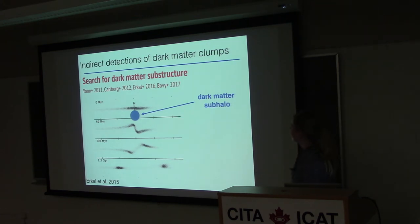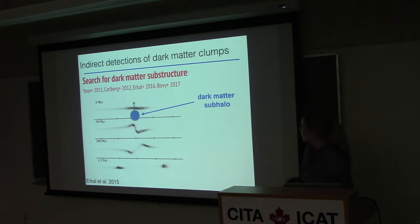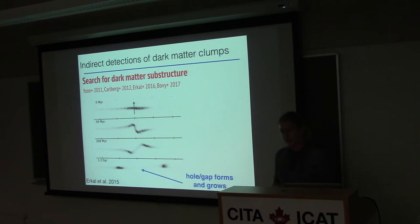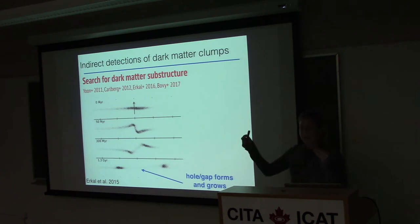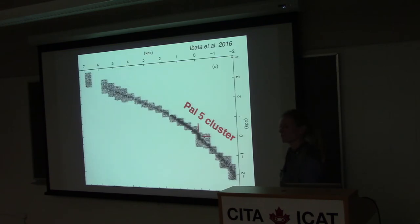The idea is that if a dark matter subhalo passes close to a stream — it could come straight on or graze by — that should offset the energy of the stars in the stream, which should then lead to a shift and change in their orbits, which will then evolve and grow into a gap. The hope is that indirectly we could use stellar streams: if we find gaps in these streams, we can constrain what we know about the sizes and distributions of subhalos in our own galaxy. It's a way to test Lambda CDM. The velocity of the impactor matters too — if it's moving too fast, the effect scales with that velocity.